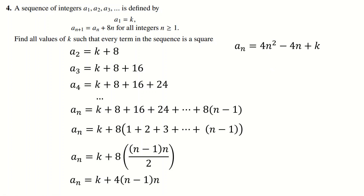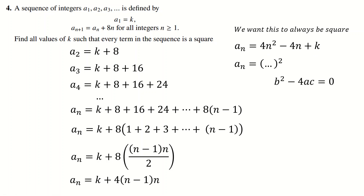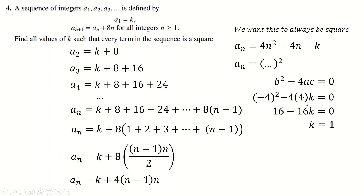For the quadratic 4n² − 4n + K to be a perfect square for all values of n, it must factorize as a perfect square — which only happens when it has a repeated root. So the discriminant b² − 4ac must equal zero. Here b = −4, a = 4, c = K. So we get 16 − 16K = 0, giving K = 1 as the only solution. Therefore K = 1 is both necessary and sufficient, and the quadratic becomes (2n − 1)², which is always a perfect square.